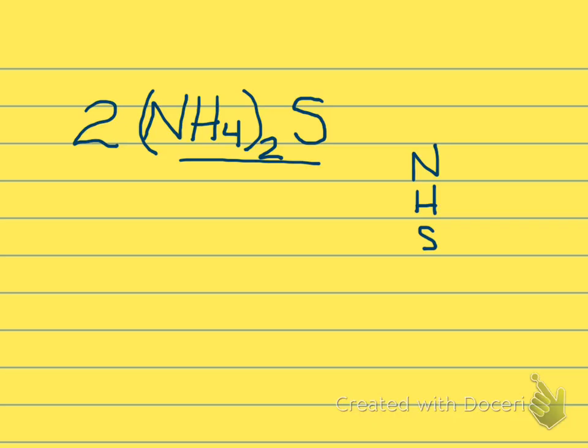Well, the 2 subscript, we assume a 1, so 2 times 1 would tell us we have 2 nitrogens. However, since there's a 2 in front, we're going to multiply by 2 again. So 2 nitrogens times 2, we have 4 nitrogens.